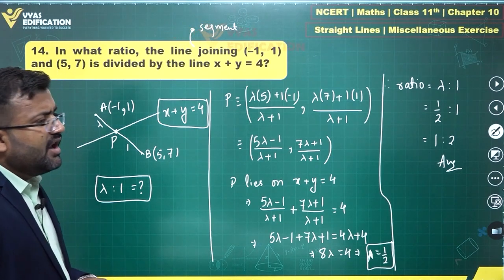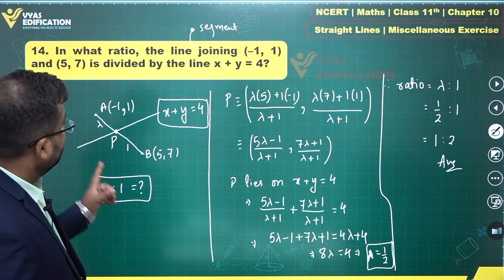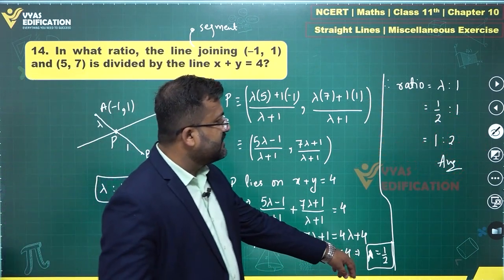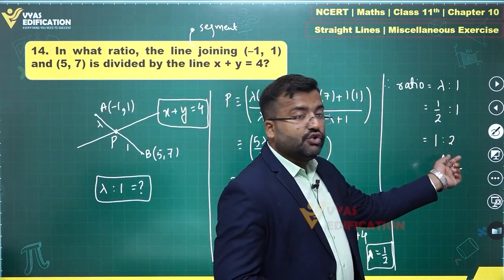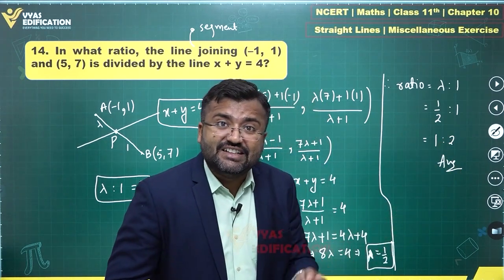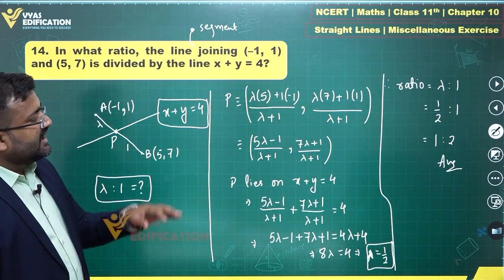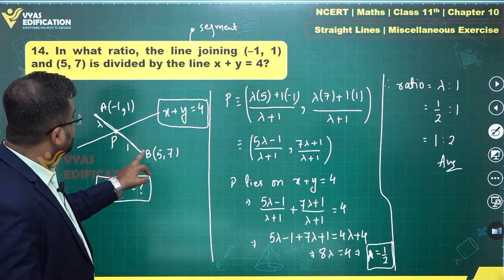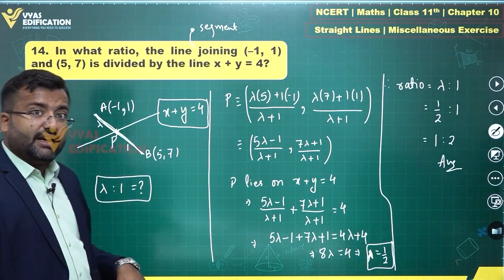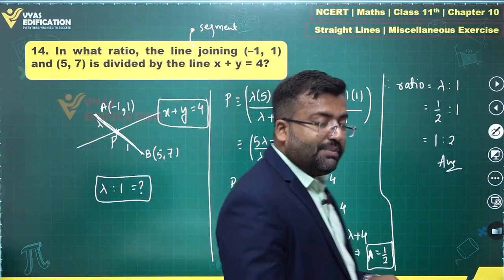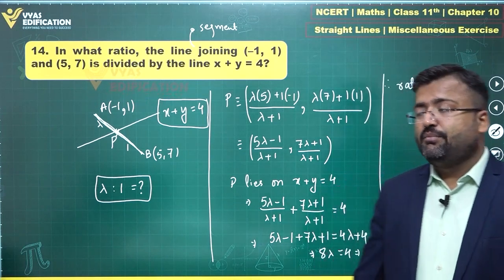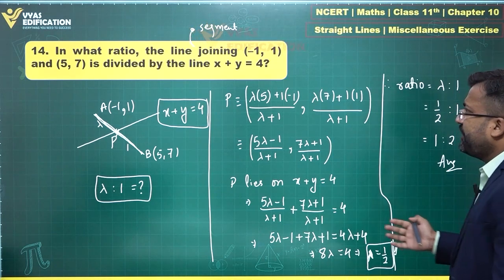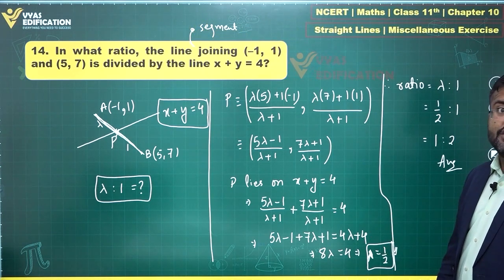One important thing: lambda could have come out to be negative. If lambda is negative, the division is not internal but external. Had lambda been minus 1 by 2, the ratio would be 1 is to 2 but as an external division. Here lambda is positive, so this is an internal division, meaning point P lies between A and B. That's the complete solution.